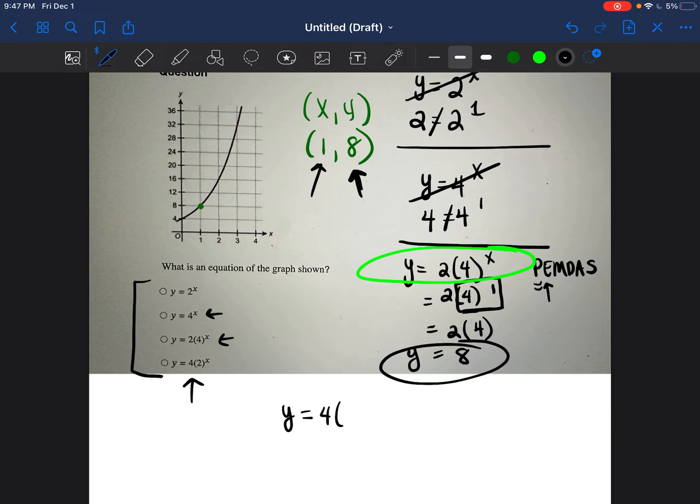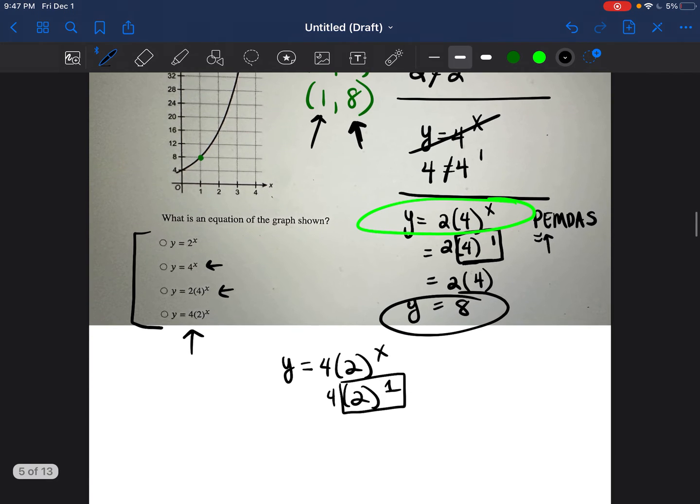Y is equal to 4 times 2 to the power of x. OK, so 4 times 2 to the power of 1. Again, we're going to do the exponents first. 2 to the power of 1 is 2. 2 times 4 is 8. And so y is equal to 8.